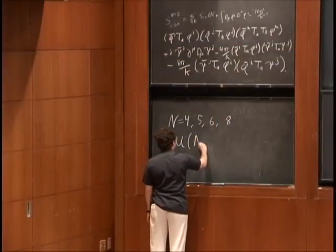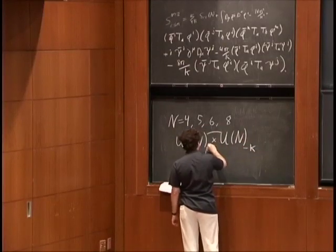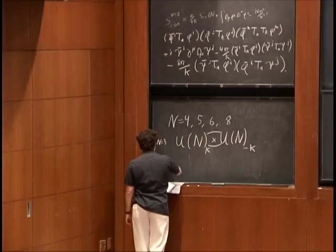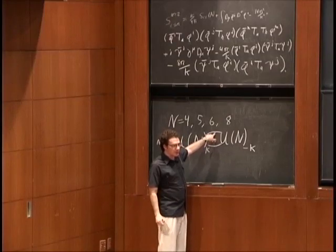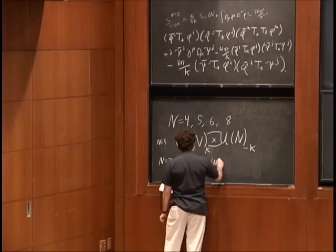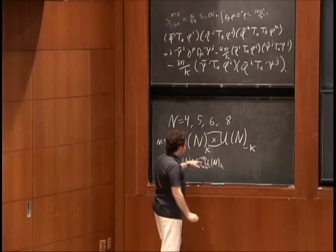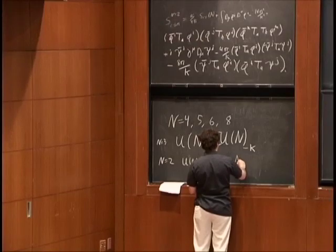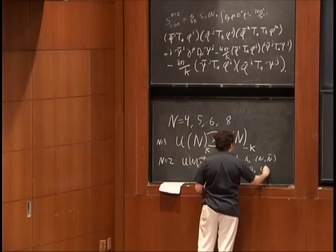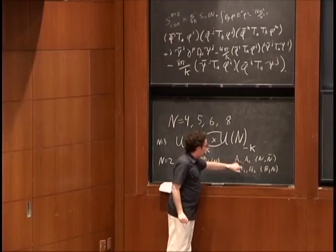I'm going to look at a particular theory: a U(N)×U(N) gauge theory with Chern-Simons levels k and −k, with two bifundamental hypermultiplets. In N=2 language, each bifundamental hypermultiplet consists of a conjugate pair of chiral bifundamentals. So in N=2 language, I would draw a quiver diagram where the double arrows mean I have two chiral fields a₁ and a₂ in the N×N̄ representation, and two chiral fields b₁ and b₂ in the N̄×N representation. a₁ and b₁ fit together to make one hypermultiplet, and a₂ and b₂ make the other one.